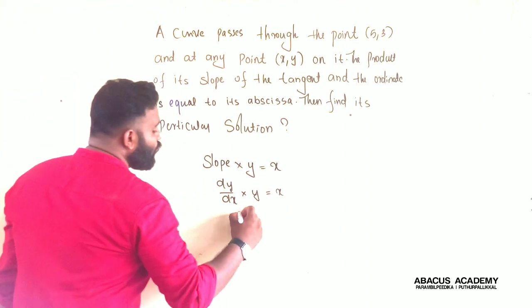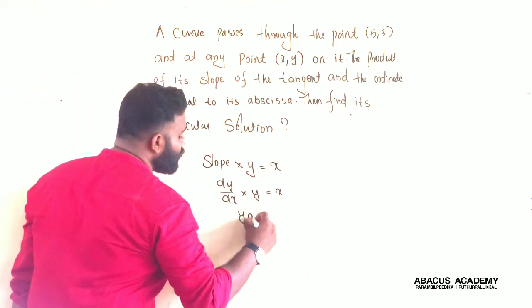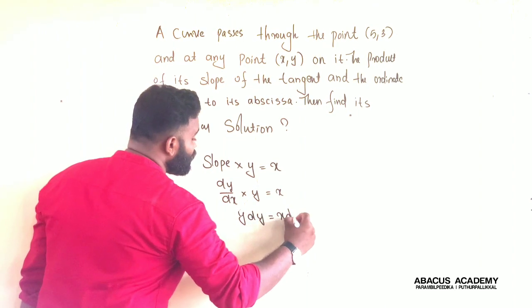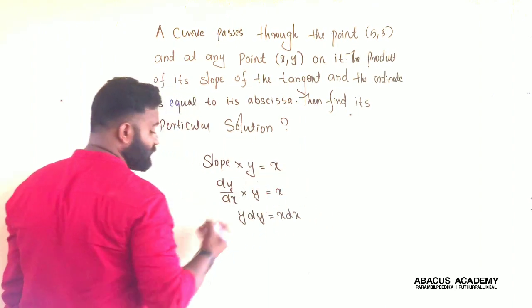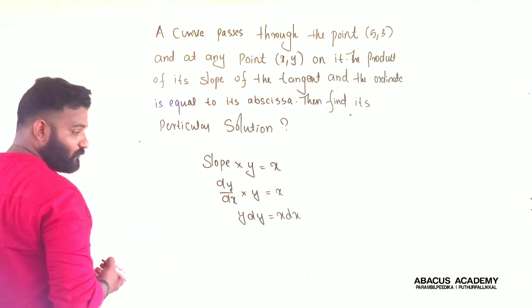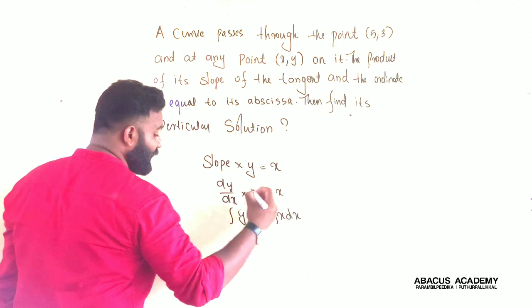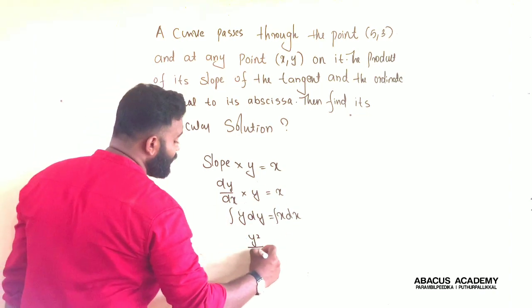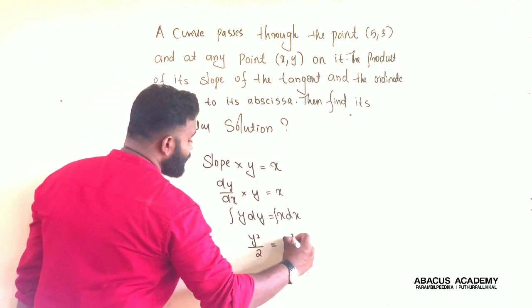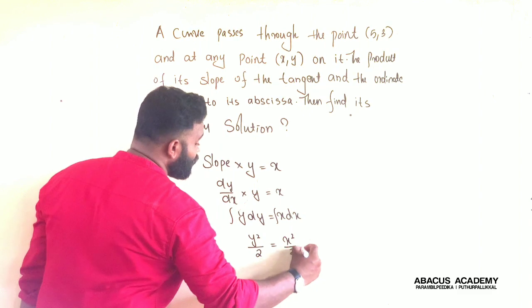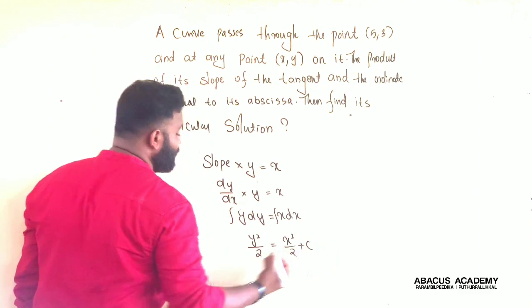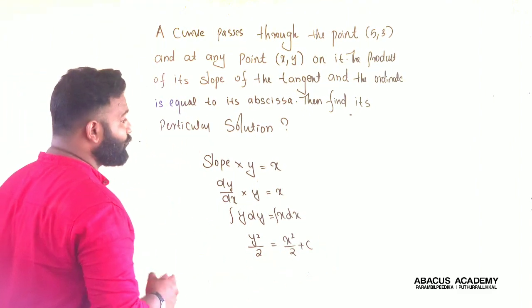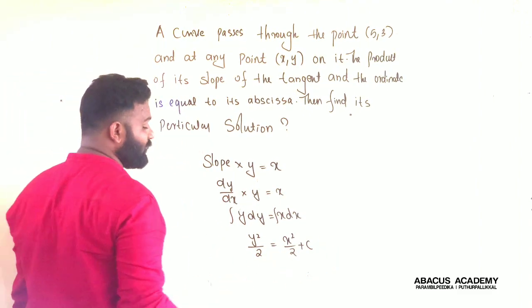So y dy is equal to x dx. Integrating both sides, what do we get? y squared by 2 is equal to x squared by 2 plus c.